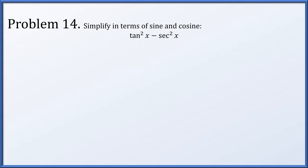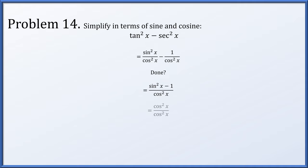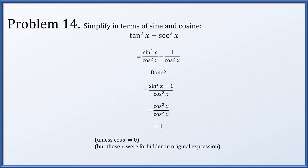In problem 14, we're going to simplify in terms of sine and cosine: tan²x − sec²x. Tangent is sine/cosine and secant is 1/cosine, so we already have everything in terms of sines and cosines. We already have a common denominator of cos²x, so we just get (sin²x − 1)/cos²x, which looks a lot like a Pythagorean identity. In fact, sin²x − 1 equals −cos²x. We now have −cos²x over cos²x, which is just −1. We divided by cosine, but if cosine x were ever equal to 0, those values were already forbidden in the original expression because we were dividing by cosine in both the tangent and secant terms.